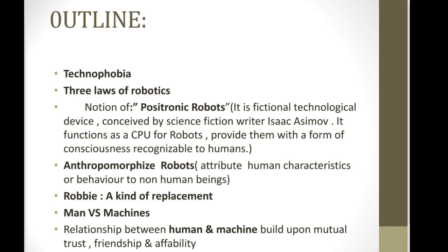The next one is the concept of anthropomorphism. 'Anthro' means human and 'morphism' means to alter the shape or form of something. According to this concept, the characteristics, attributes, emotions, thoughts, and feelings of human beings are assigned to non-human beings. We see this technique throughout this chapter because Isaac Asimov replaced the word 'it' with 'him' for robots, in order to anthropomorphise them.